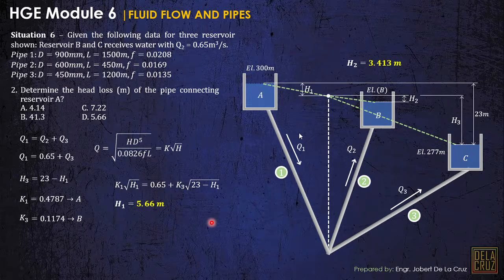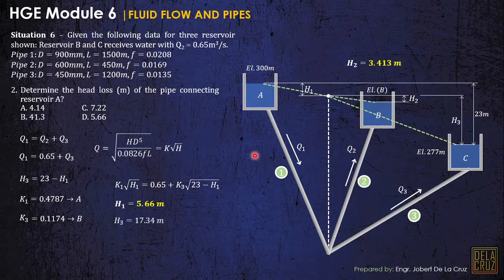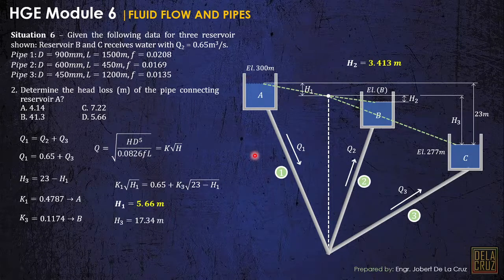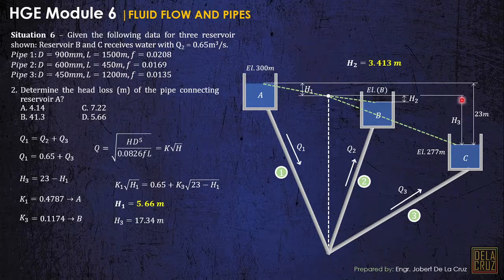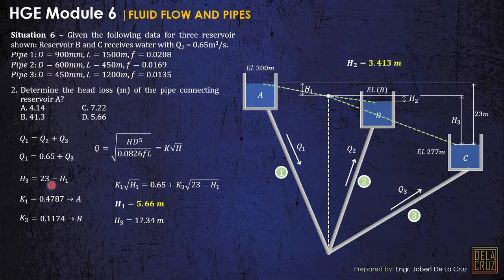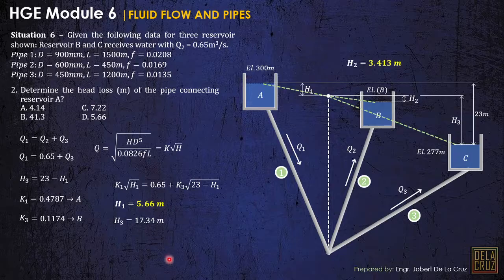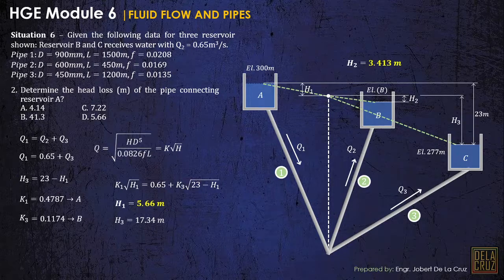Now how about part 3? So let's solve H sub 3. We can use this. H sub 3 by the way, that is 23 minus 5.66, and that is 17.34.